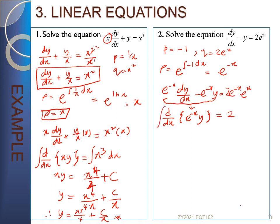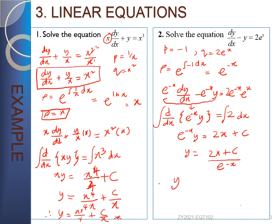Integrating both sides: e^(−x)·y equals 2x plus c. Solving for y: y equals (2x plus c) divided by e^(−x), which can be rewritten as y equals 2x·e^x plus c·e^x. That is the general solution for example 2.